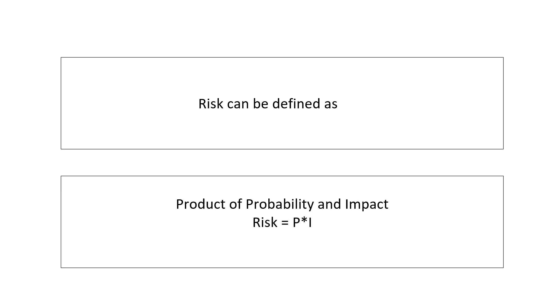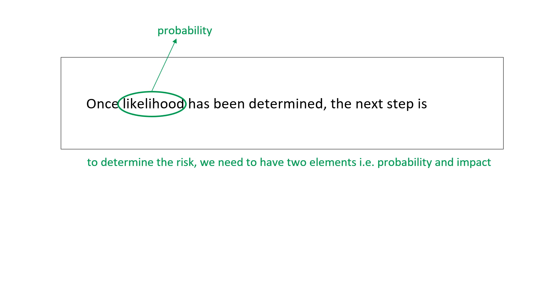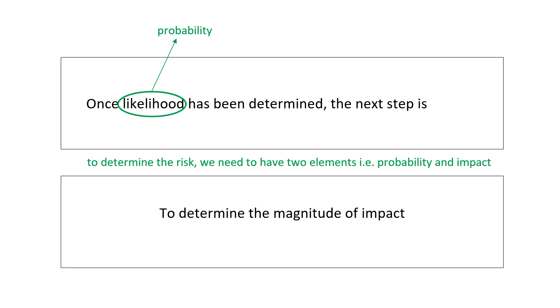So let us discuss some key aspects from an exam perspective. Risk can be defined as the product of probability and impact. Once the likelihood has been determined — and likelihood means probability — to determine the risk we need two elements: probability and impact. So the next step is to determine the magnitude of the impact.